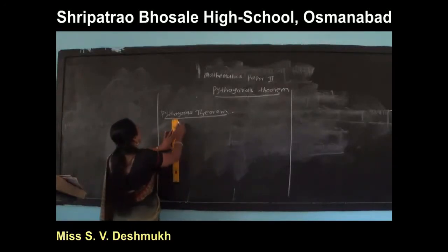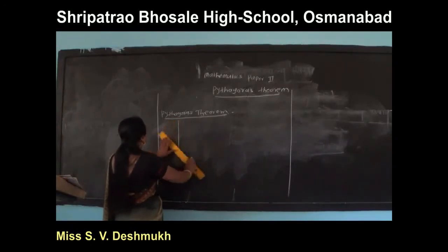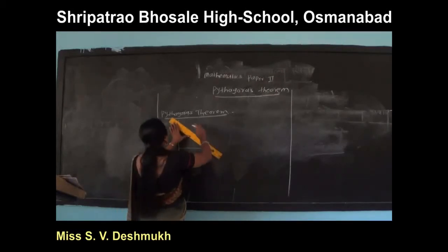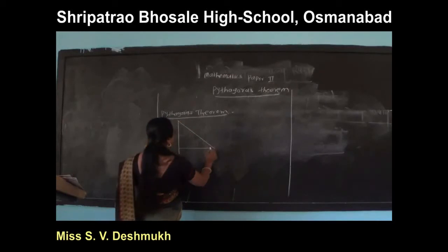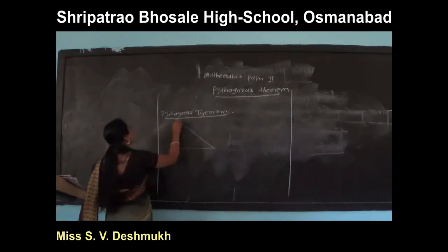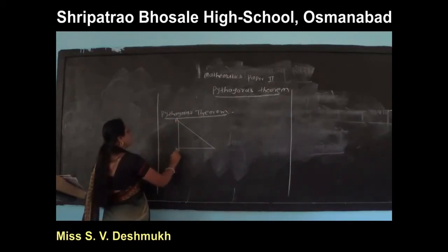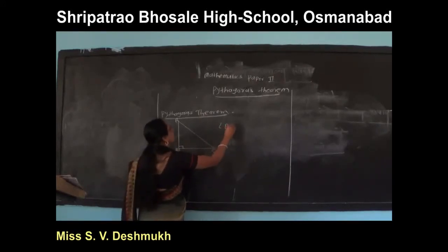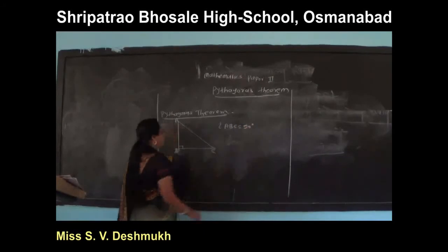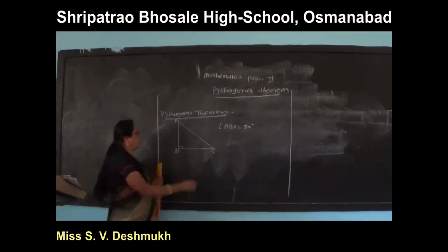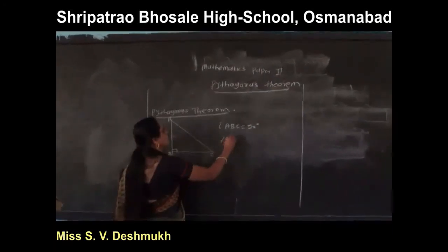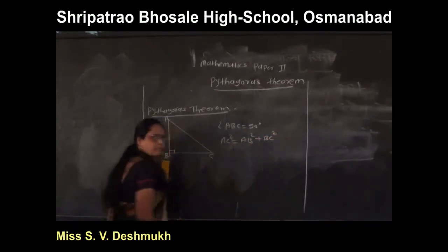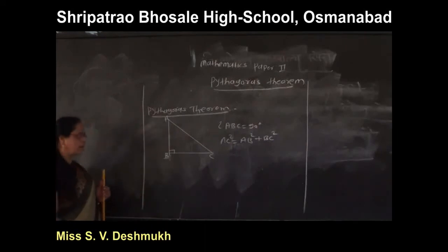In a figure, in a right angle triangle ABC, angle C is equal to 90 degrees. AC is the hypotenuse, and therefore AC square is equal to AB square plus BC square.